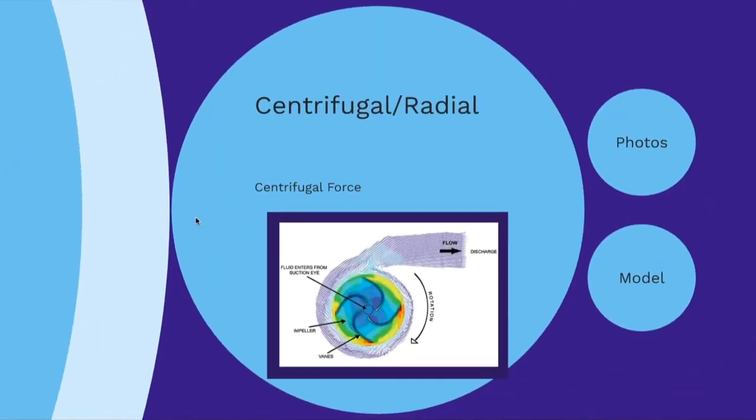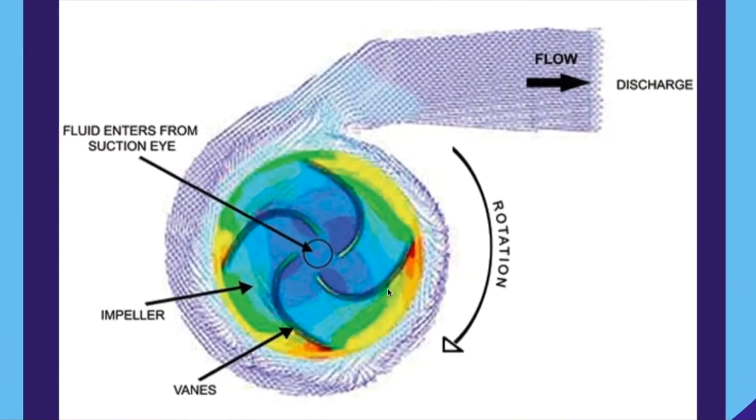Let's talk about the radial one. As the name implies, we have a circle or a radius right here. The rotation goes here and the discharge goes here, so let's check this out a little bit more technically.